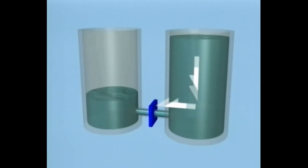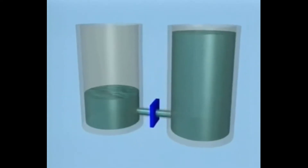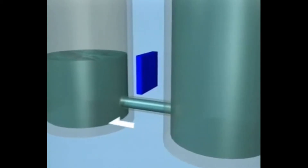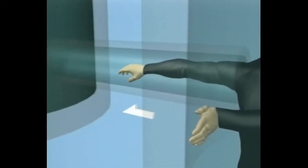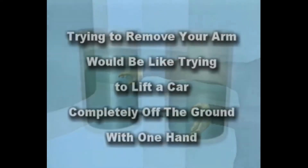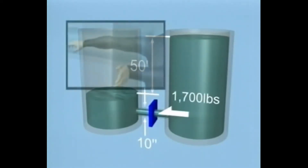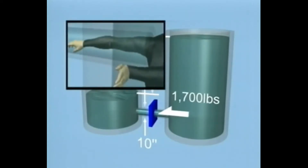The force depends on the difference in the depths of the water and the diameter of the pipe. If the difference between the depth of water is 50 feet and the diameter of the pipe is 10 inches, the force of water exerted on the valve is nearly 1,700 pounds. If the valve was suddenly opened and your arm was near it, it would be sucked into the hole instantly. Trying to remove your arm would be like trying to lift a car completely off the ground with one hand. You could only remove your arm if the pressures between the two bodies became nearly equalized, but at this pressure your body makes a perfect seal, stopping the bodies of water from equalizing.